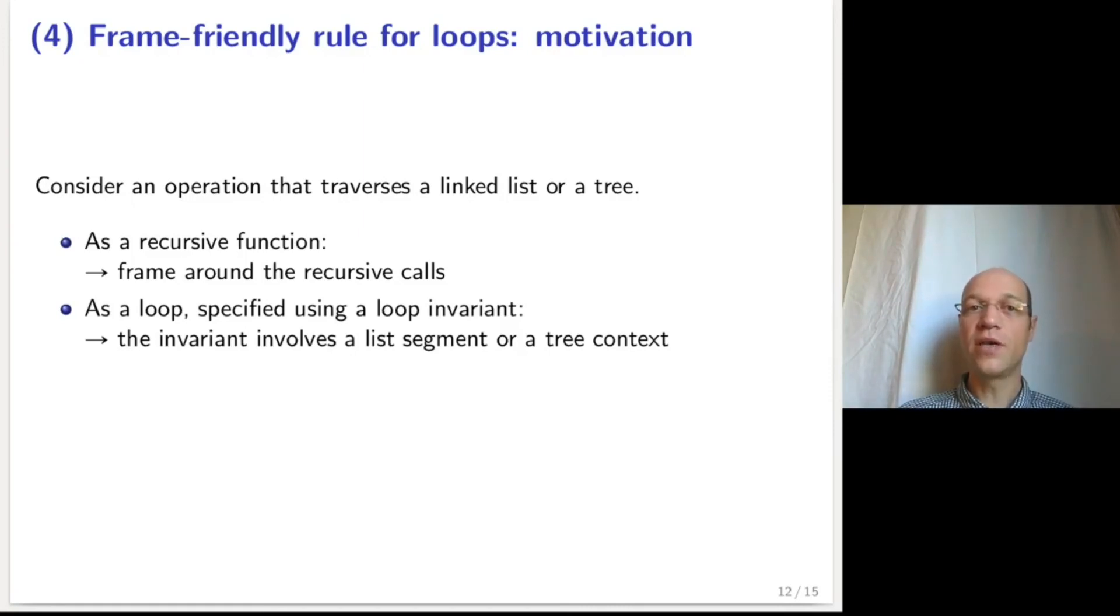On the contrary, if the operation is implemented as a loop and specified using a loop invariant, the loop invariant must describe the list segment of cells that have already been passed by, or worse, in the case of a tree, must describe the tree context associated with a path that has already been traversed.